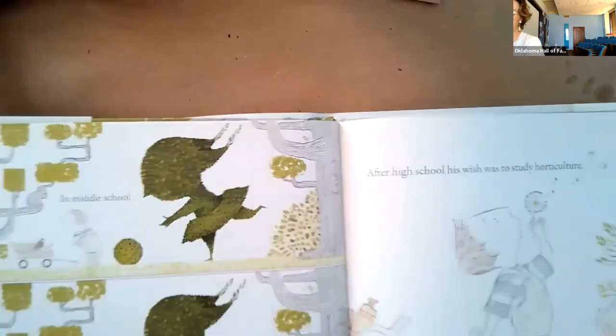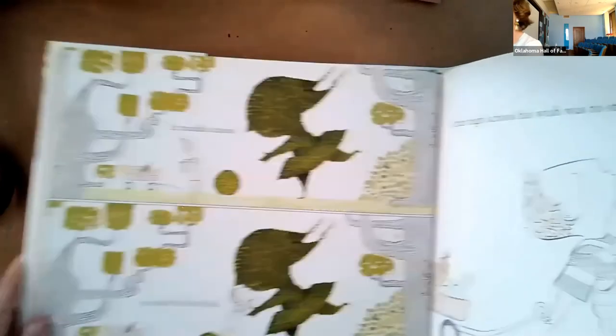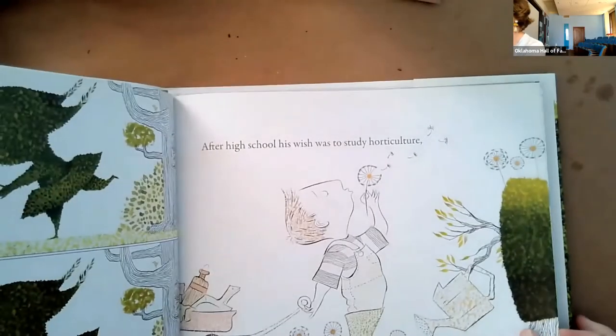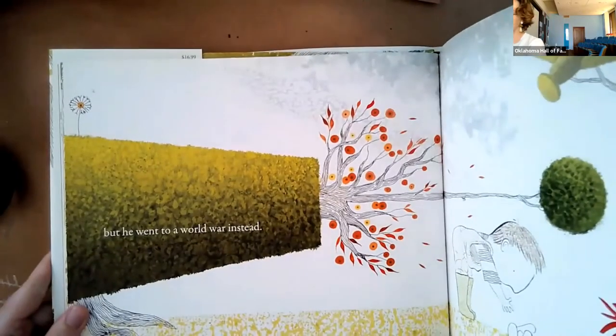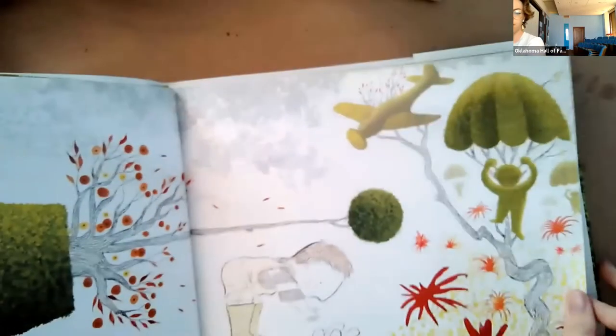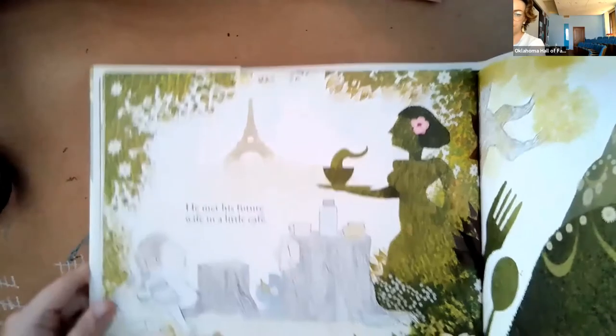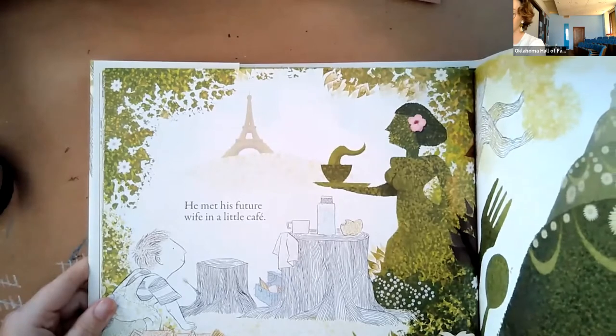In middle school, he stole his first kiss. After high school, his wish was to study horticulture, which is kind of the study of plants. But he went to a world war instead. He met his future wife in a little cafe. It looks like it's in Paris, France.